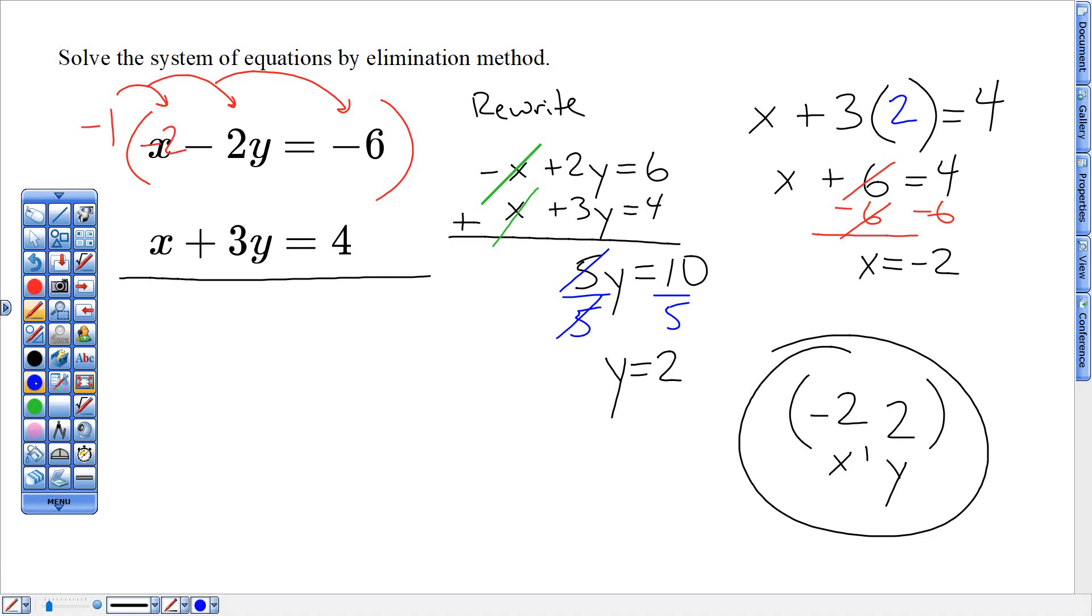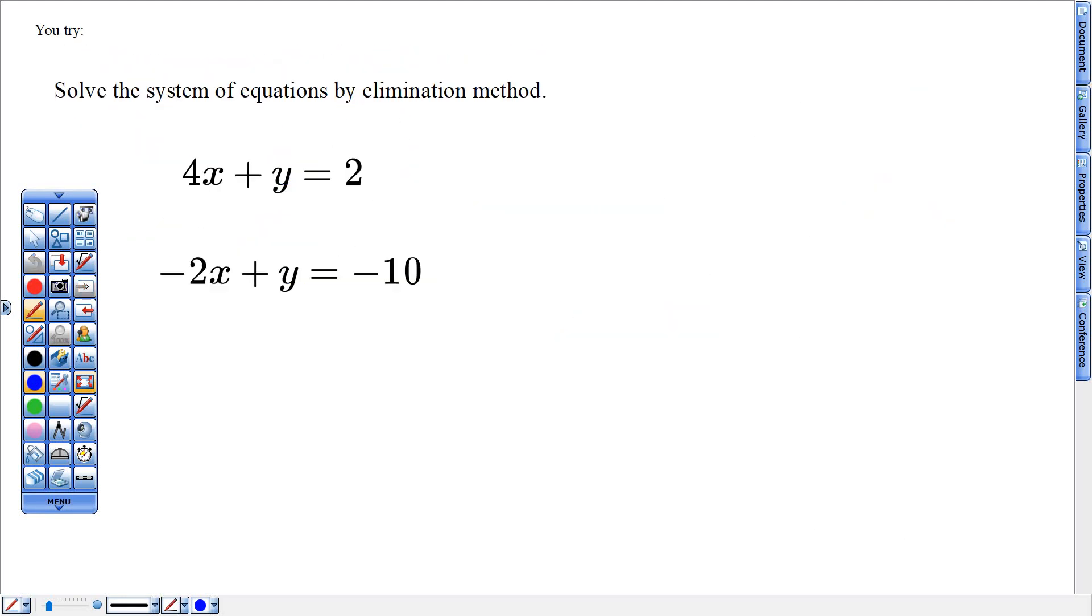So that is my solution coordinate. If I was to check it I would be plugging in negative two right here and plugging in two right there. That would work and also plugging in negative two right here and plugging in two right there. That should work for both. Last problem I want you to try this one on your own where this one I suggest eliminating one of these y's by picking a row either top or bottom to times it by negative one. That's my suggestion for that one.